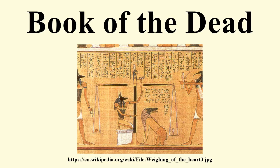The spells served a range of purposes. Some are intended to give the deceased mystical knowledge in the afterlife, or perhaps to identify them with the gods — for instance, Spell 17, an obscure and lengthy description of the god Atum. Others are incantations to ensure the different elements of the dead person's being were preserved and reunited, and to give the deceased control over the world around him. Still others protect the deceased from various hostile forces, or guide him through the underworld past various obstacles. Two spells also deal with the judgment of the deceased in the weighing of the heart ritual. Spells 26 to 30, and sometimes spells 6 and 126, relate to the heart and were inscribed on scarabs.